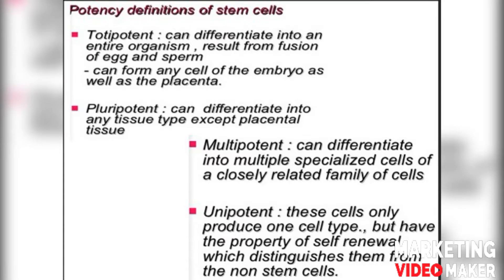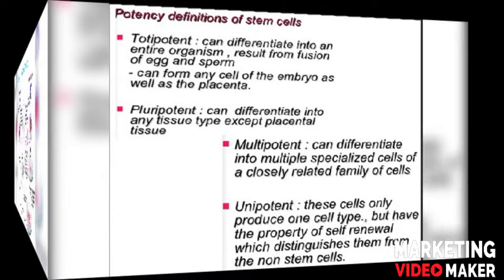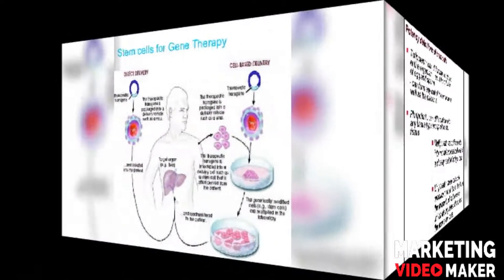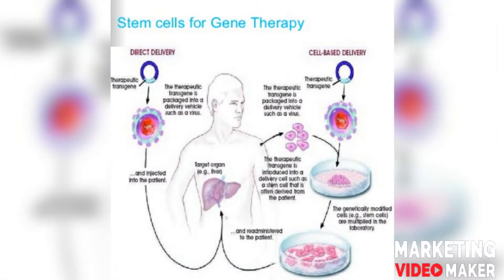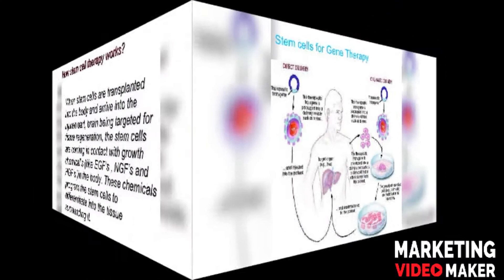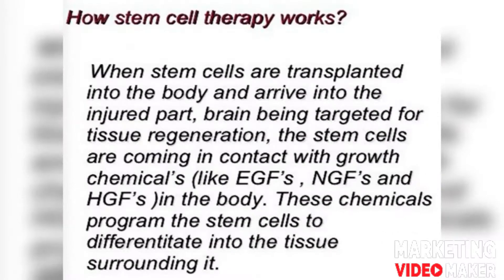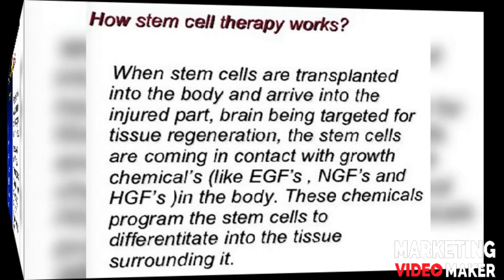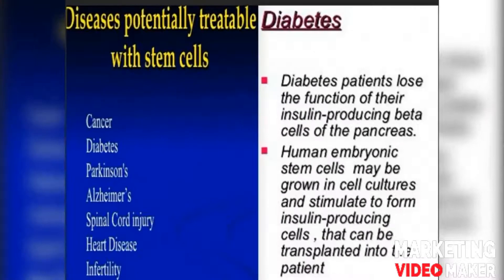Now we talk about the working of stem cell therapy. When stem cells are transplanted into the body and arrive at the injured part — the brain being targeted for tissue regeneration — the stem cells come into contact with growth chemicals like EGF, NGF, and HGF in the body. These chemicals program the stem cells to differentiate into the tissue surrounding the disease site.